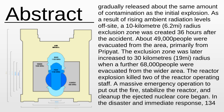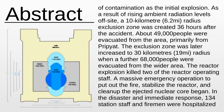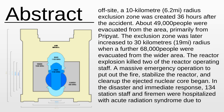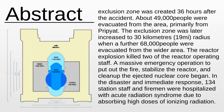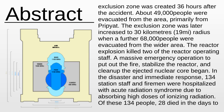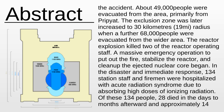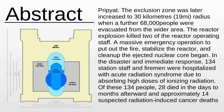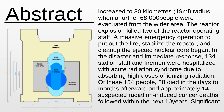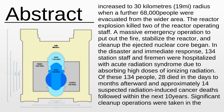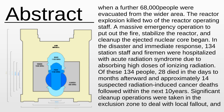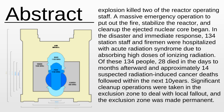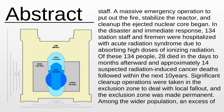As a result of rising ambient radiation levels off-site, a 10-kilometer (6.2 miles) radius exclusion zone was created 36 hours after the accident. About 49,000 people were evacuated from the area, primarily from Pripyat. The exclusion zone was later increased to 30 kilometers (19 miles) radius when a further 68,000 people were evacuated from the wider area.